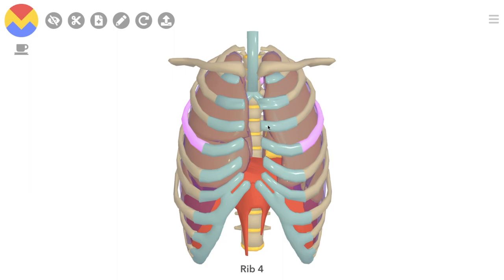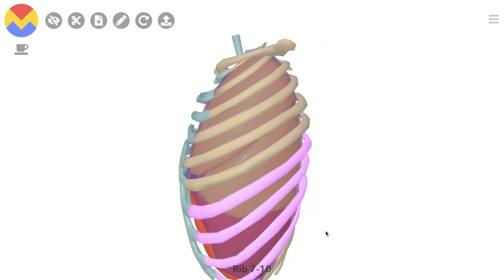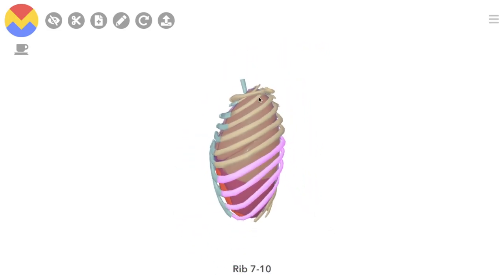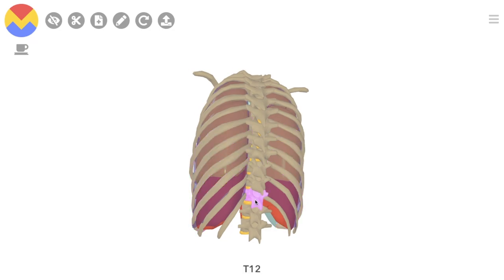The left pleura does not come as close to the midline because of the cardiac bulge. At the inferior border, the pleura courses around to the side, crossing the eighth rib in the midclavicular line, the tenth rib in the mid-axillary line, and meets posteriorly at the T12 vertebra.